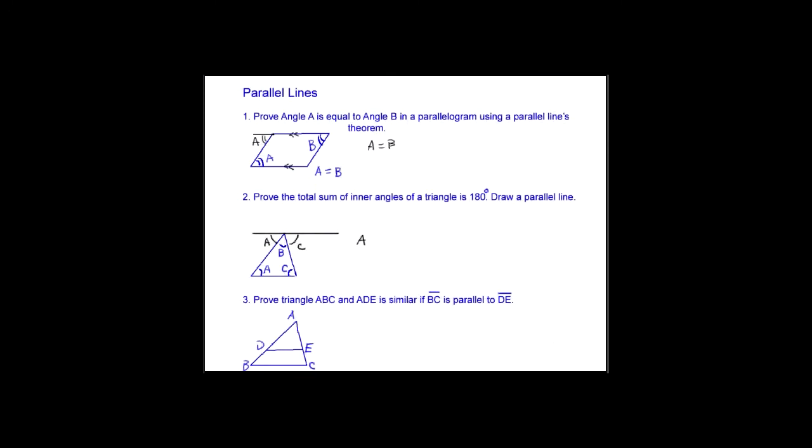For the traverse line, A and B is also equal because the other pairs also parallel. Next one we draw parallel line to the bottom, then using the same theory angle A and C we add in, so A plus B plus C will be 180.